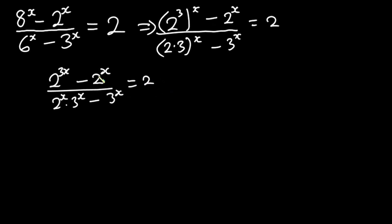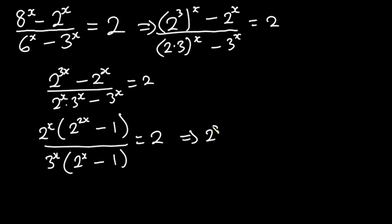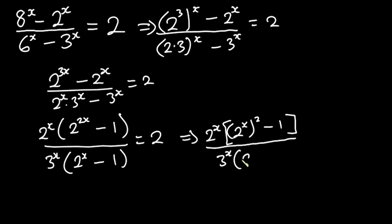So here I can factor 2 to the power x out in the numerator. We have 2 to the power x times 2 to the power 2x minus 1, all divided by — and here I can factor 3 to the power x out — 3 to the power x times 2 to the power x minus 1, and this is equal to 2. Now I can write the numerator as 2 to the power x times (2 to the power x) squared minus 1, divided by 3 to the power x times 2 to the power x minus 1, equal to 2.